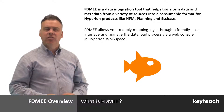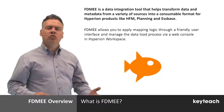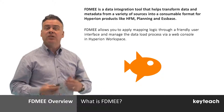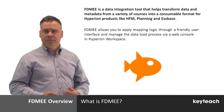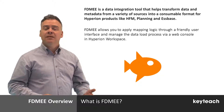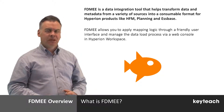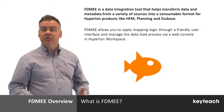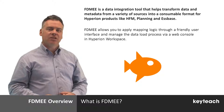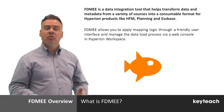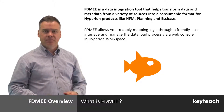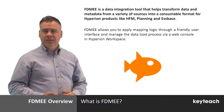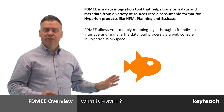FDMEE is a data integration tool that helps transform data and metadata from a variety of sources into a consumable format for Hyperion products like HFM, Planning, and Essbase. This is done by applying mapping logic through a friendly user interface and managing the data load process via a web console in Hyperion Workspace. At each stage of the data load process, if it is completed successfully, an orange fish will display.